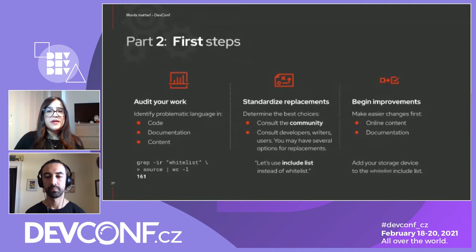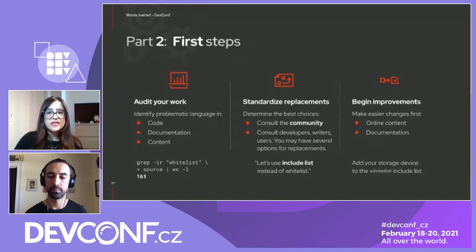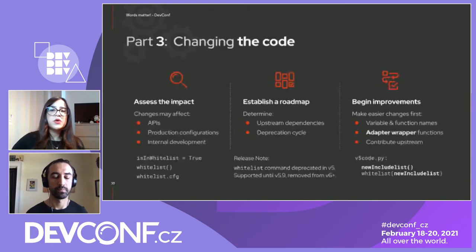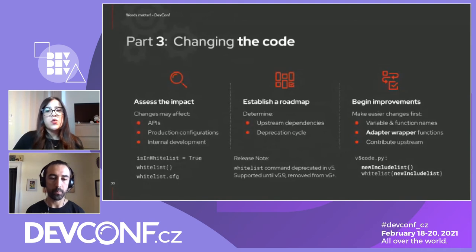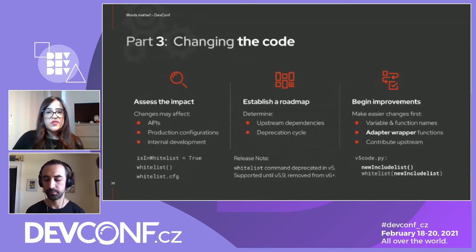Start by changing what's relatively easy — the online content and documentation. For example, replace occurrences of whitelist with include list. The next step is changing things in code. Assess the impact of changing harmful language there, as it can affect API products, configuration, or internal development. Establish a roadmap with a clear deprecation schedule, so you have a period of time in which both the new and old terms work — using the old term would initially result in a warning, and eventually an error message while not interrupting functionality.